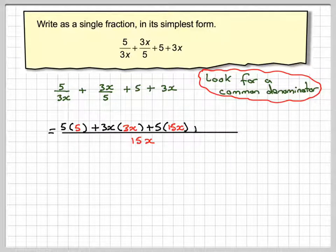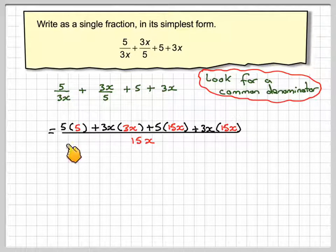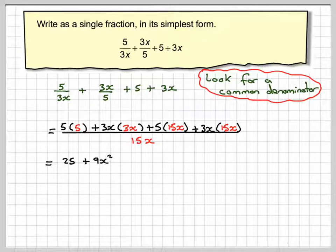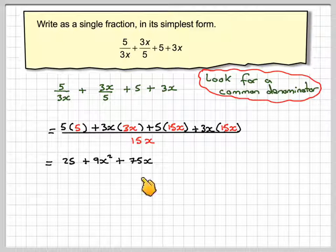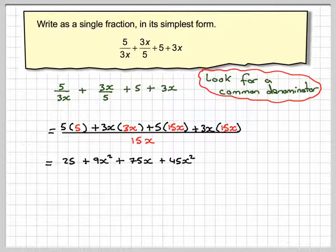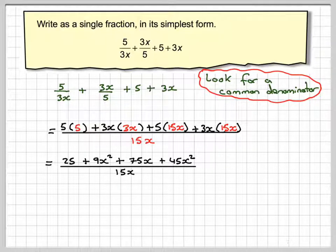The same can be said for the 3x as well. So multiplying each of those out, we get 5 times 5 which is 25, 3x times 3x which is 9x squared, 5 times 15x which is 75x, and 3x times 15x which is 45x squared, divided by 15x.